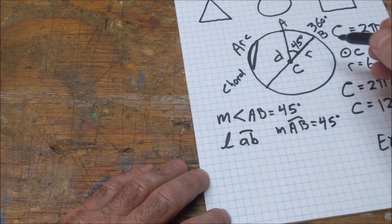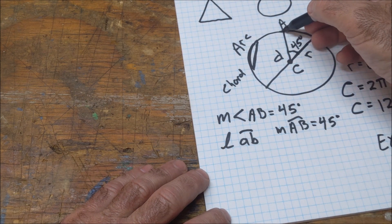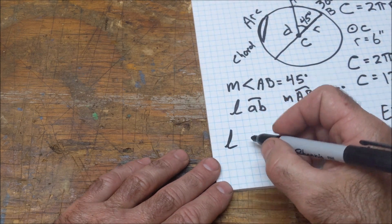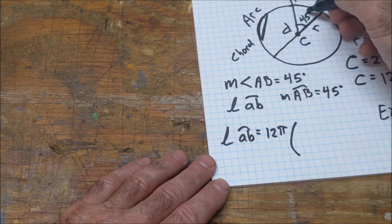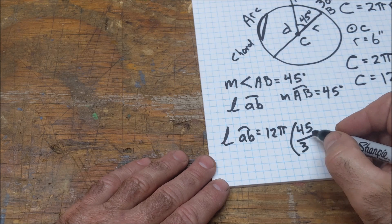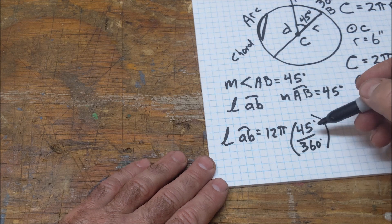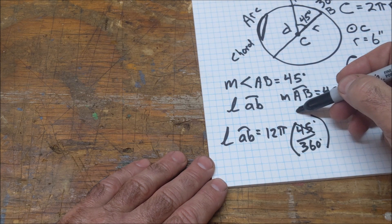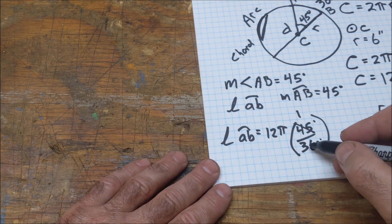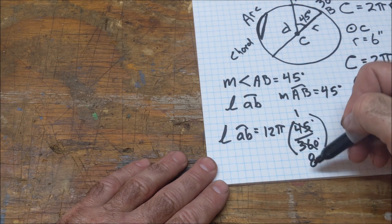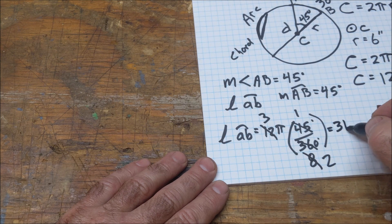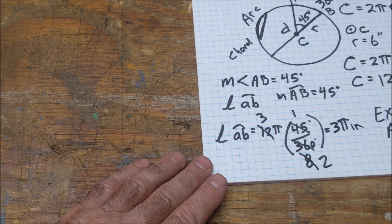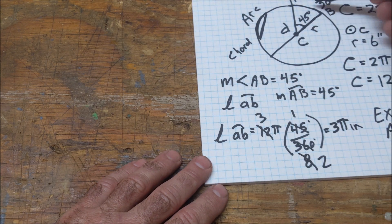If I want to find the length of arc AB, I take the length all the way around and multiply by the fraction of what I want over the total. So the length of arc AB equals the circumference 12π times 45 over 360. Degrees cancel; I reduce that fraction — 45 goes into 360 eight times, so that's one-eighth. Then four goes into 12 three times, giving an exact value answer of 3π inches. The big idea is the difference between measure in degrees and length in linear units.